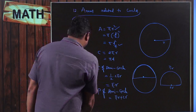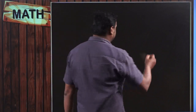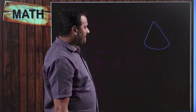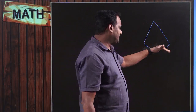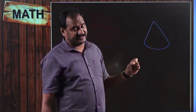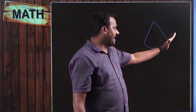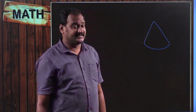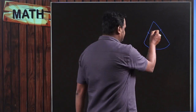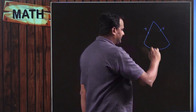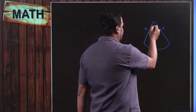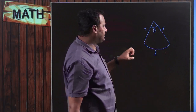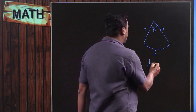Another part of a circle is a sector — the region bounded between two radii and a corresponding arc. This is r and this is r, and this is the length of arc of the sector. The angle made by the arc at the center is θ, and there is a relation: l = rθ.